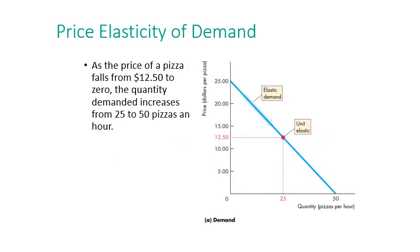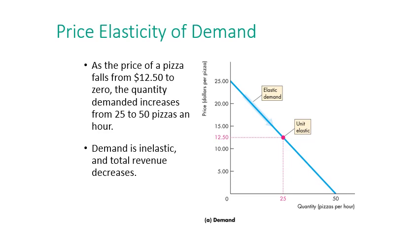As the price of pizza falls from $12.50 to zero, the quantity demanded increases from 25 to 50 units. In this range, demand is inelastic and total revenue will decrease.